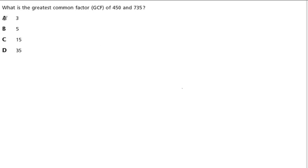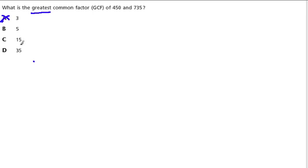So three can't be the answer. Because if five already goes into both of these, and five is greater than three, we're looking for the greatest number in this list that goes into both of them — three is out. So now, just by guessing, we have almost a 33% chance of getting this right.